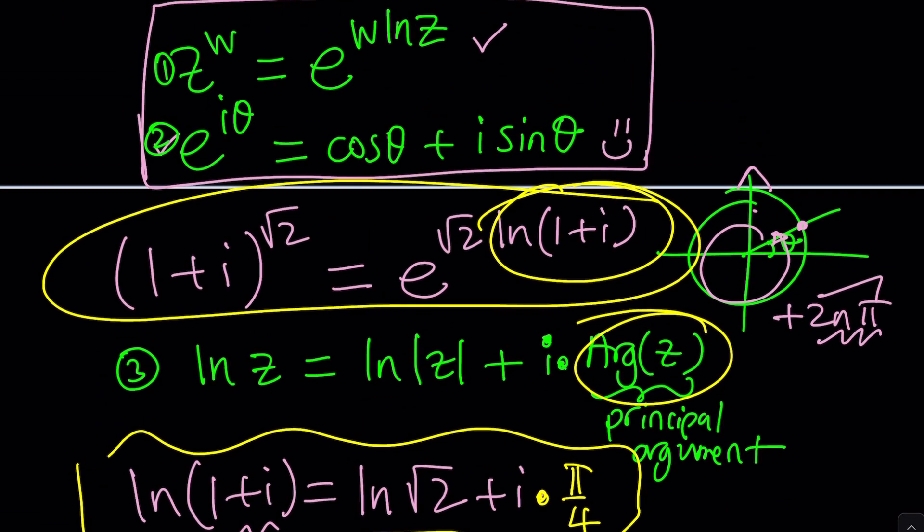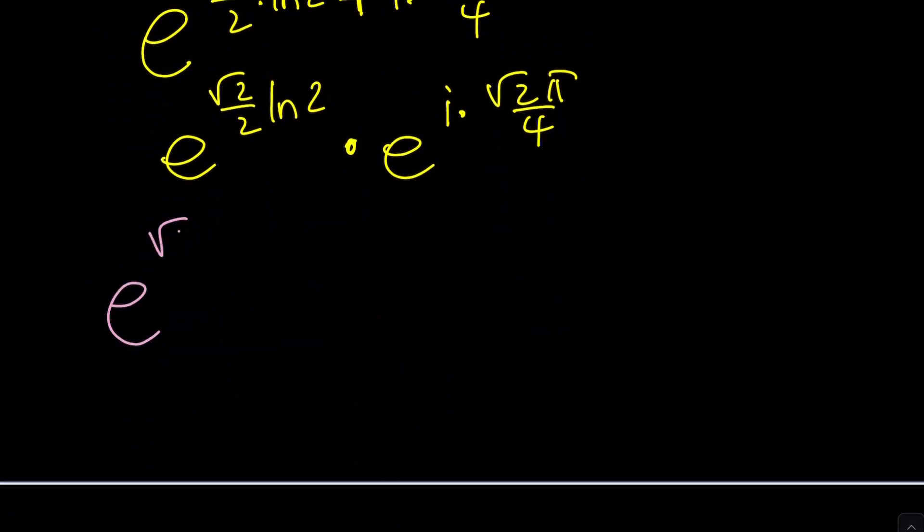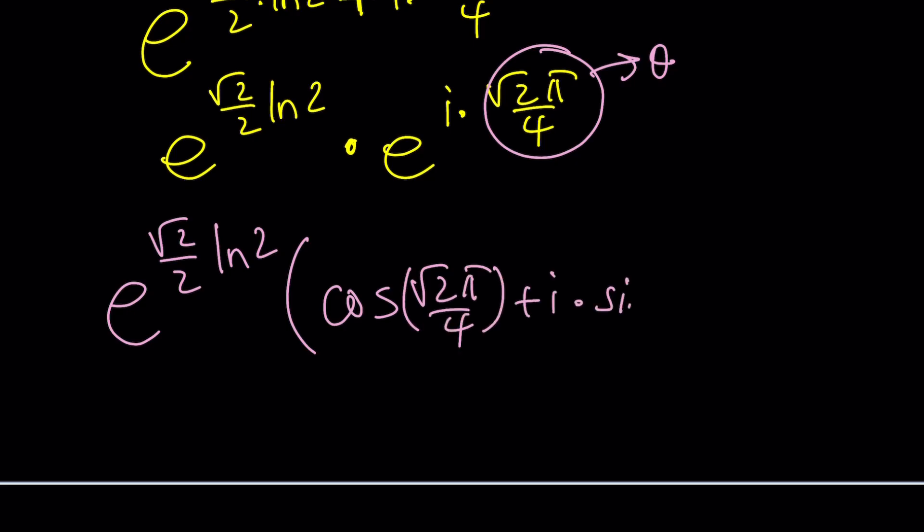This is where we use Euler's formula. Where is that formula? The second one. Yes. e to the power i theta is cosine theta plus i sine theta. Now take a look at this because we're finding the exact value already. Cosine, this is my theta by the way, root 2 pi over 4 plus i times sine of root 2 pi over 4. What's the numerical value? I'll show you. But that's the answer. That is 1 plus i to the power root 2. Can you believe that? It's amazing, right?